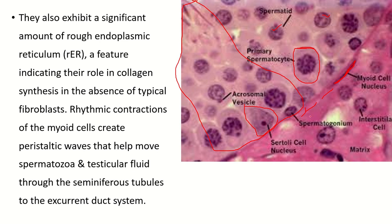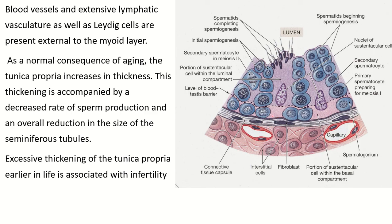Outside the seminiferous tubule are the interstitial cells of Leydig, which secrete testosterone. This testosterone acts on the Sertoli cell and also influences the development of the spermatogenic cell. The tunica propria separates the Sertoli cells and spermatogenic cells of the seminiferous tubule from the blood vessels.